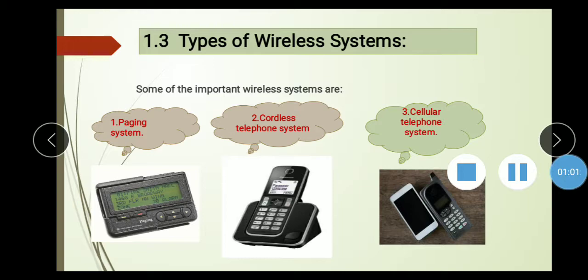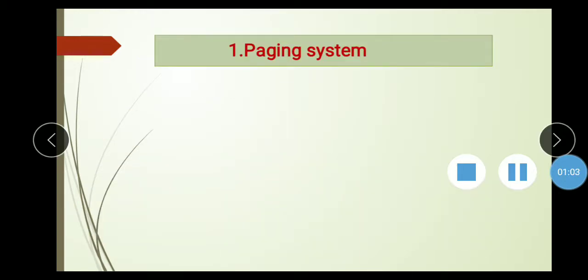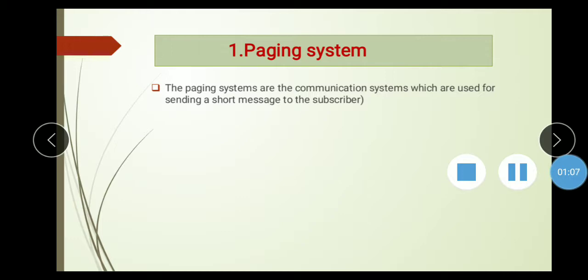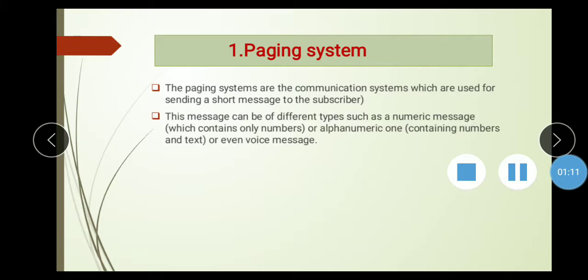Now, we discuss the paging system. Paging systems are communication systems which are used to send a short message to the subscriber. This message can be different types, such as numeric message which contains only numbers, and alphanumerical one which contains text or even voice message.